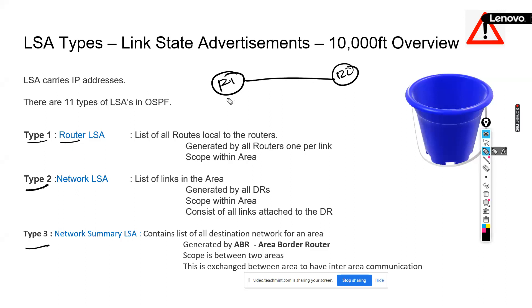Imagine that I am having R1 router and R2 router. We are studying LSA types in OSPF. LSA expands to Link State Advertisement. We start with Type 1 LSA.